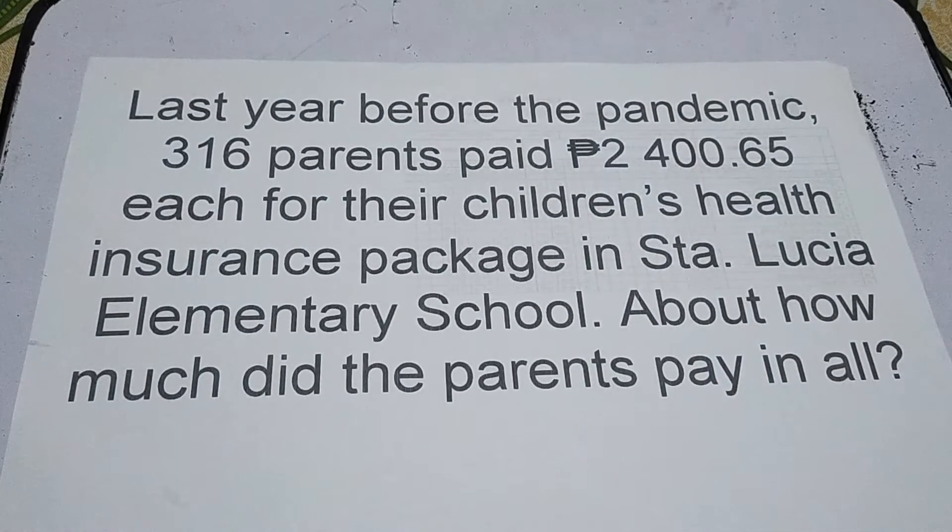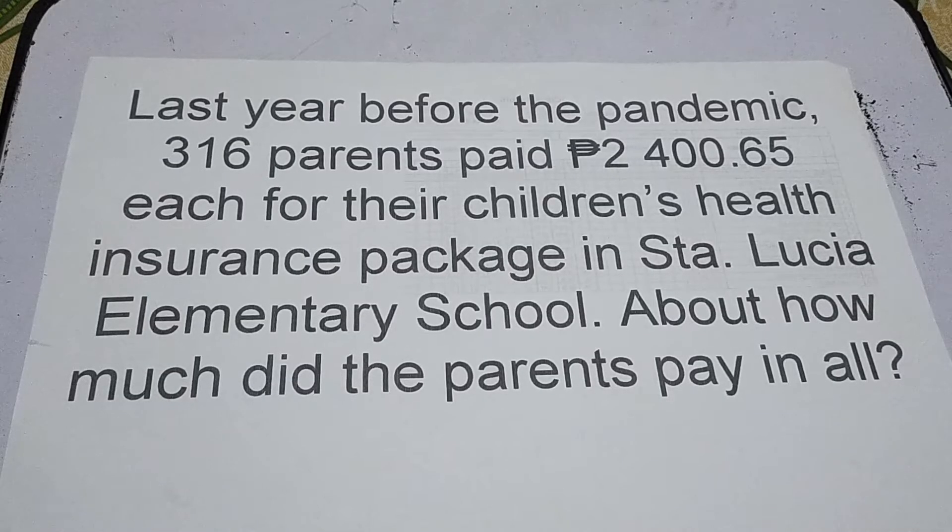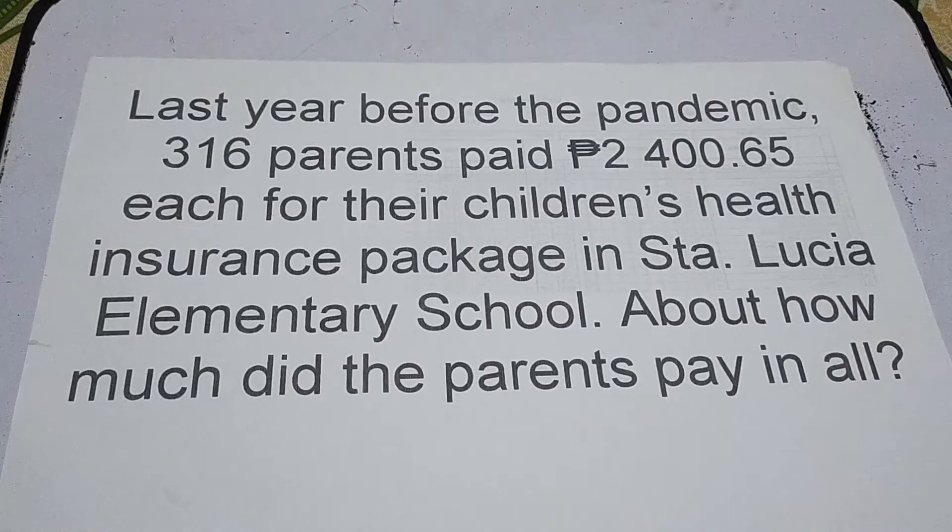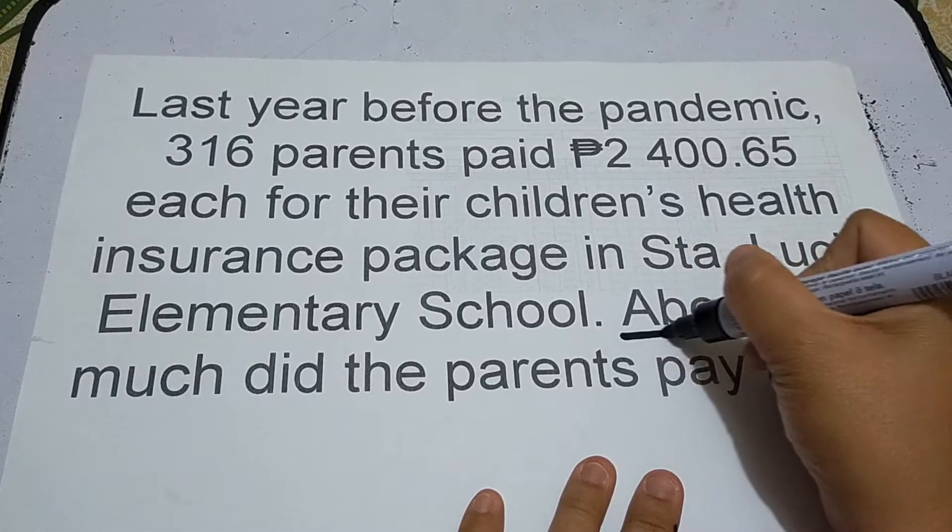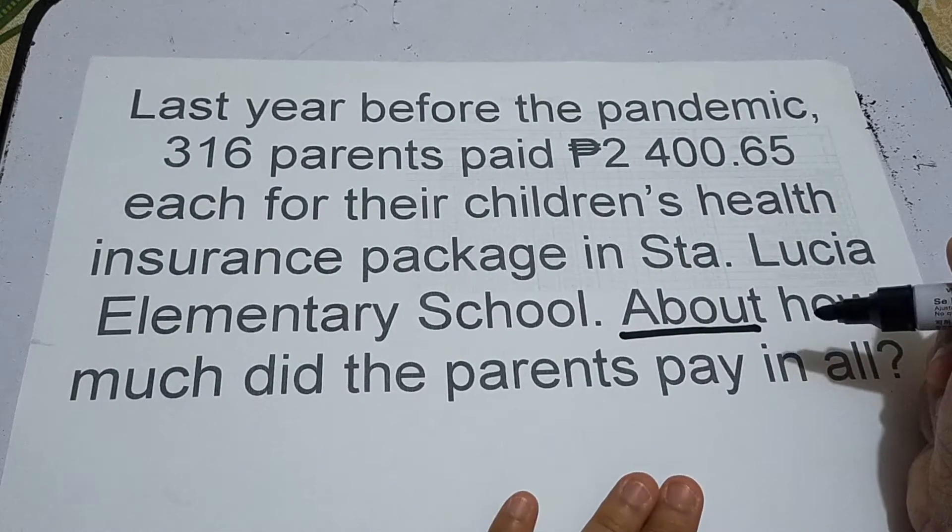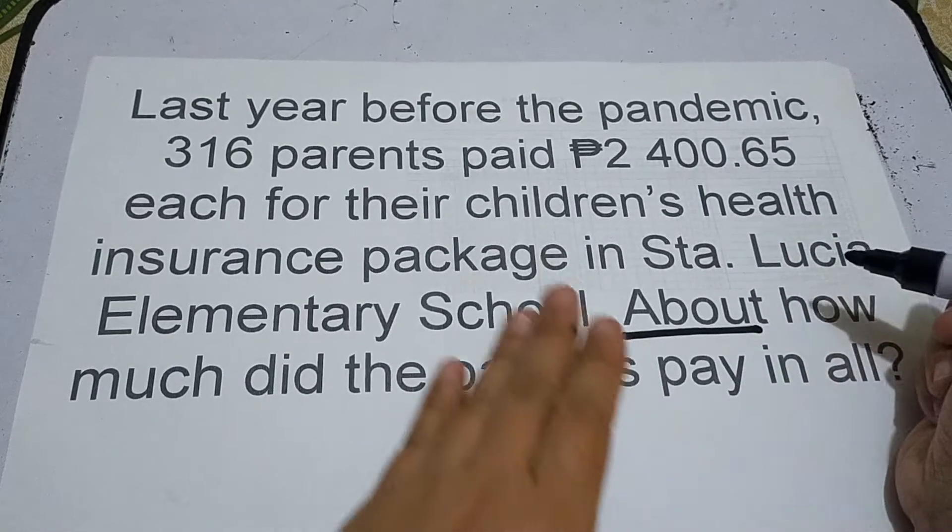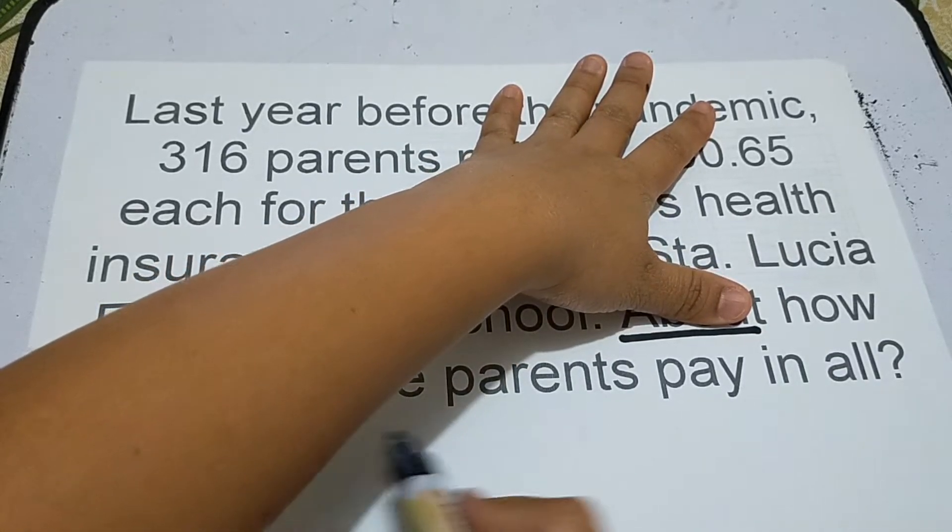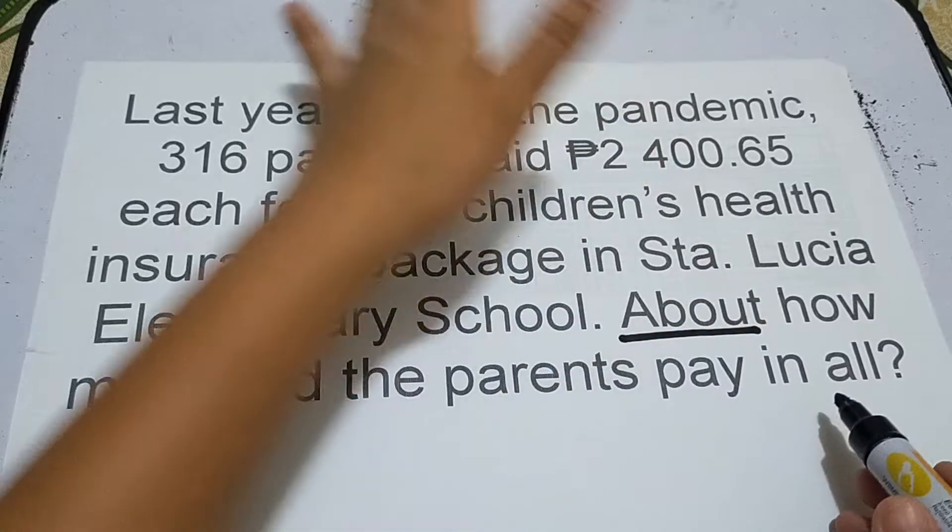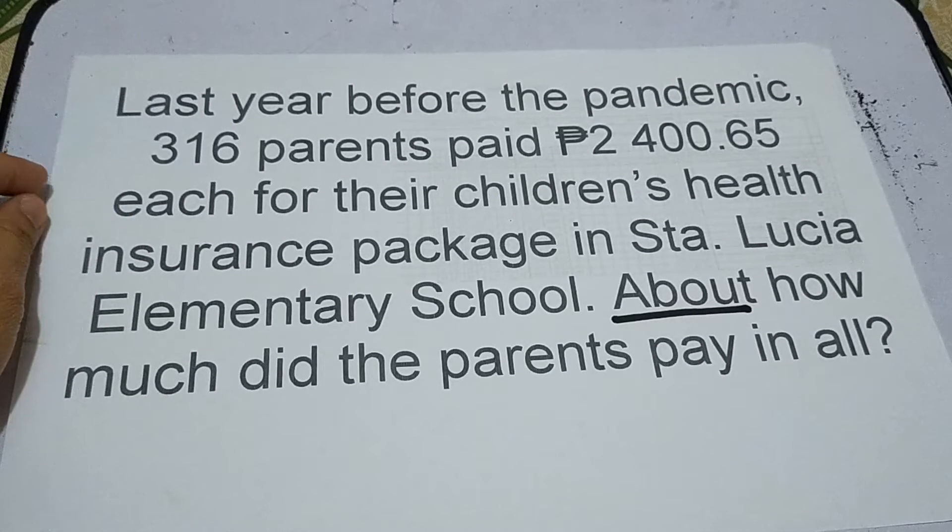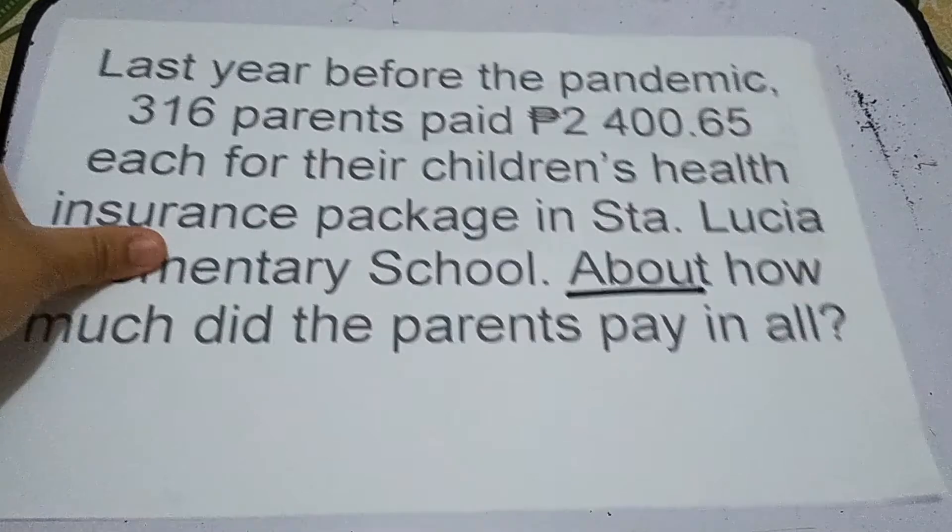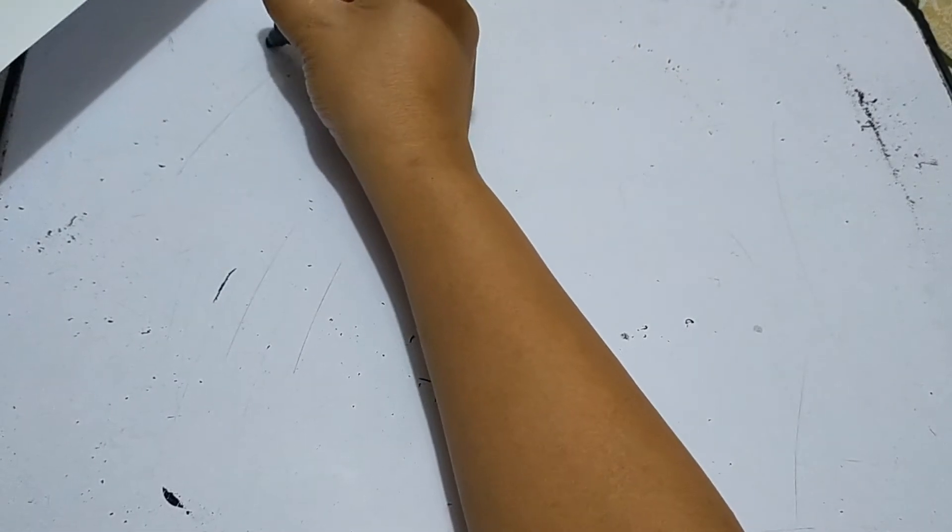Last year before the pandemic, 316 parents paid 2,400 pesos and 65 centavos each for their children's health insurance package in Santa Lucia Elementary School. About how much did the parents pay in all? As you can see in this problem, at the end there's the word 'about,' which means the required answer needs to be estimated. If there's no 'about' and it just says 'how much did the parents pay in all,' that means no estimation, just the result. Since there's 'about,' we'll estimate our answer. In solving word problems, we're going to use the first step plan. The first step is understand.